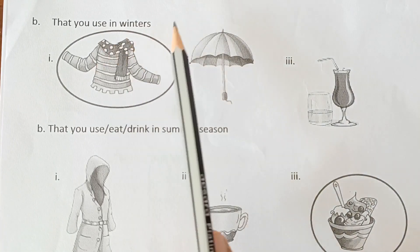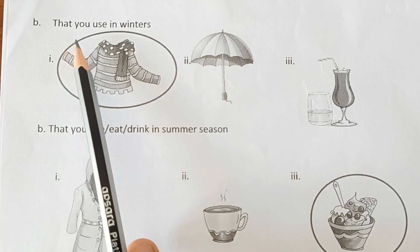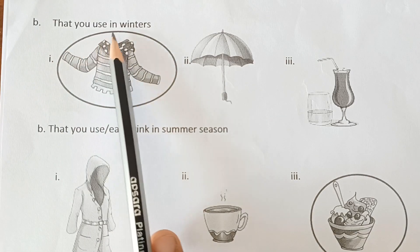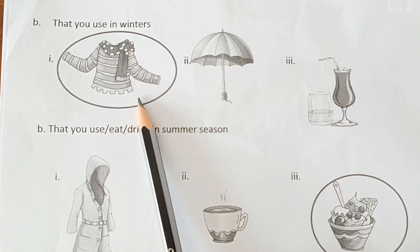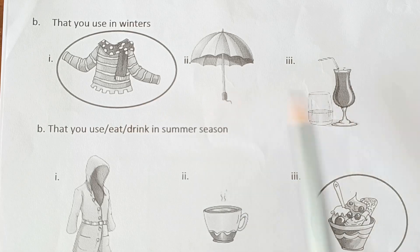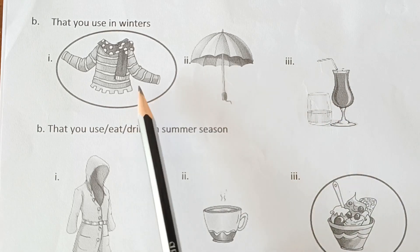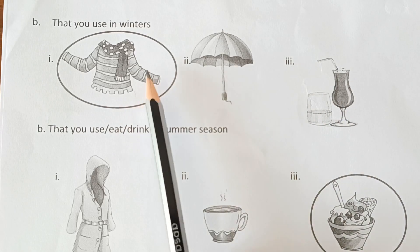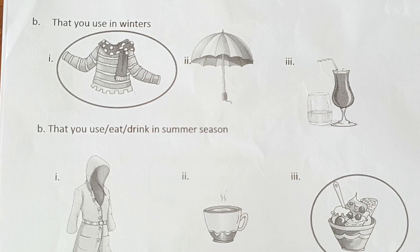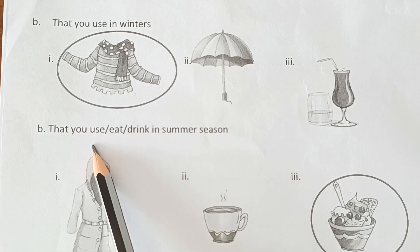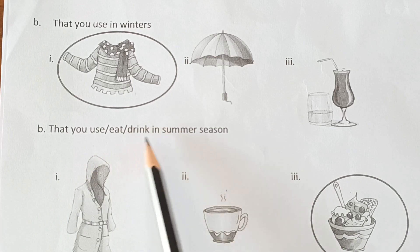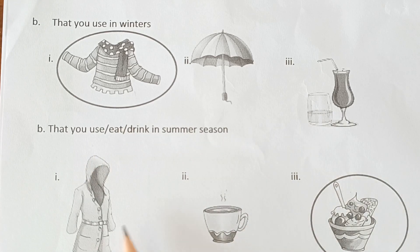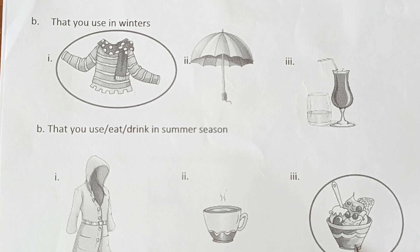Next question: Circle the correct option. First, what do you use in winters? The options are woolen clothes, umbrella, and cold drinks. Woolen clothes is the answer for winter use. What do you eat or drink in the summer season? Ice cream is the right option.